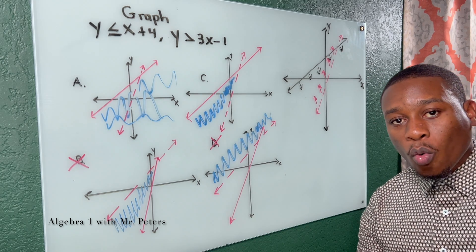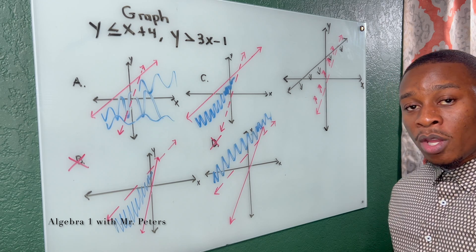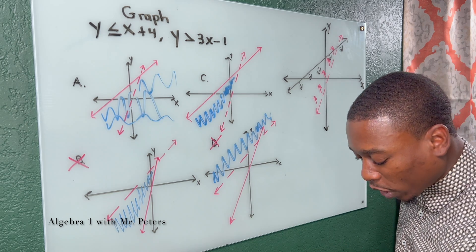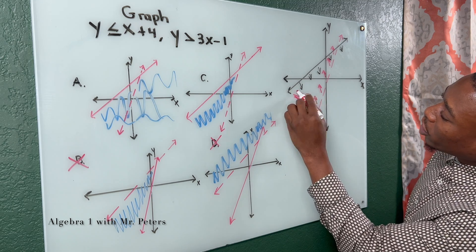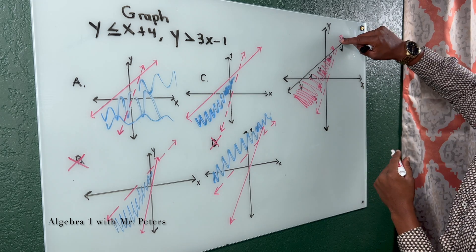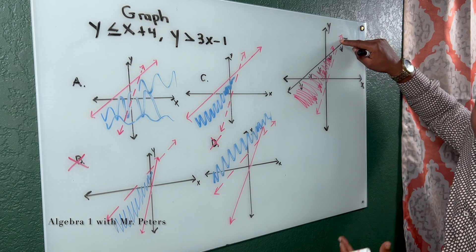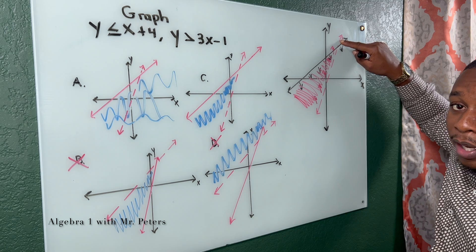Now, to know where or what is the correct answer, we're going to shade where it satisfies both equations. So if you look right here, this little area satisfies both equations. But when we come up here, this does not satisfy the equation. It's only going to satisfy one of the lines and not both.